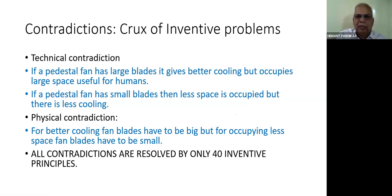Another technical contradiction: if food is fried more, it tastes good but more calories are consumed. If food is fried less, less calories are consumed but it doesn't taste good. This technical contradiction can be converted into physical contradiction. For better cooling, fan blades have to be big, but for occupying less space, fan blades have to be small. That means fan blades have to be big and fan blades have to be small. This is a demand on the physical size of the blades.